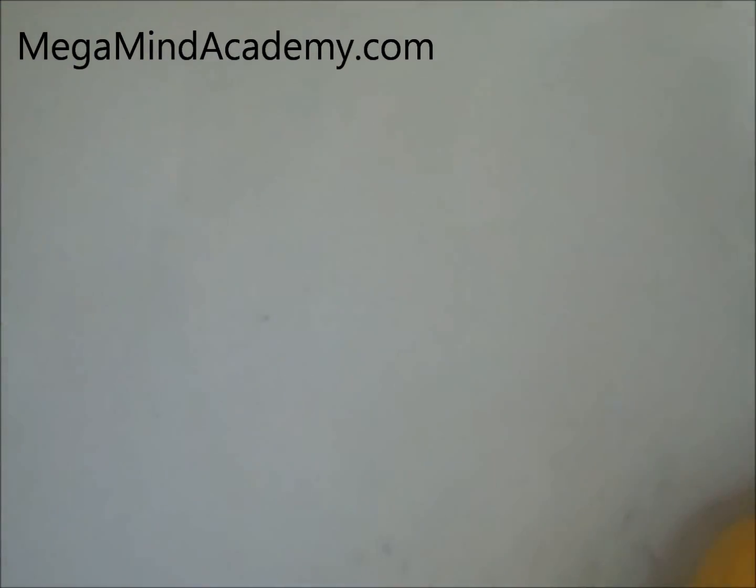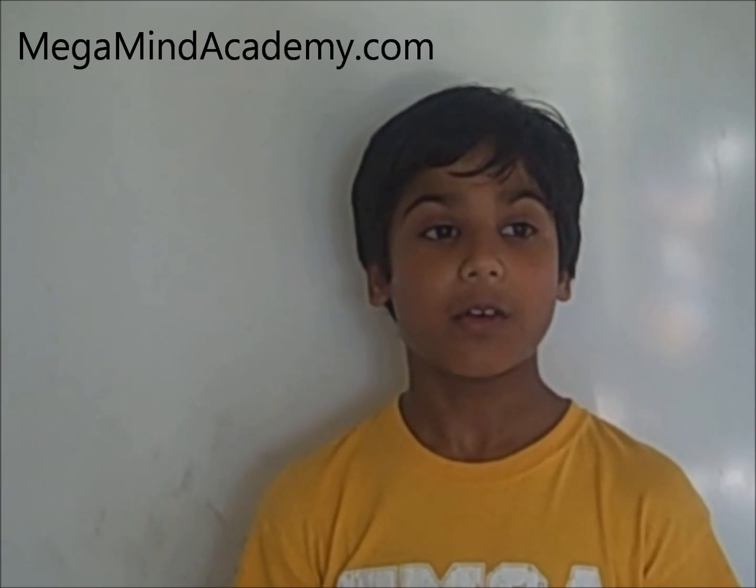The rule of 10 is very simple. In order to find if the number is divisible by 10, the last digit has to be ending with 0.